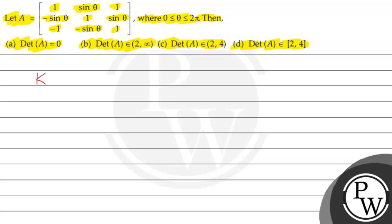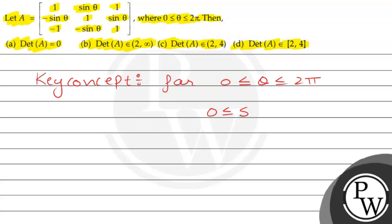First, I will tell you the key concept to help solve this question. The key concept is: for 0 less than or equal to theta less than or equal to 2 pi, we have 0 is less than or equal to sin squared theta, which is less than or equal to 1.